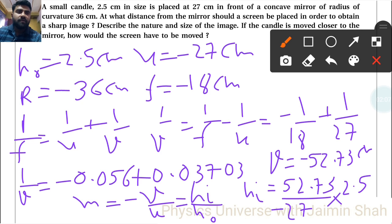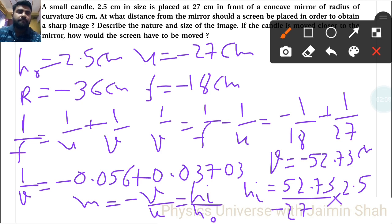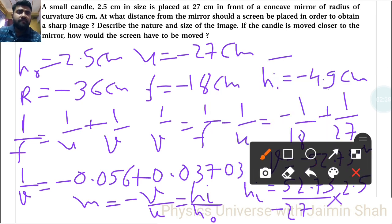This gives HI equal to minus 4.9 centimeter. This negative sign indicates that the image is inverted. The image is bigger than the object, it is real, inverted, and bigger in size than the object.